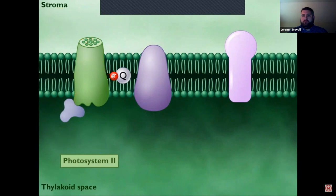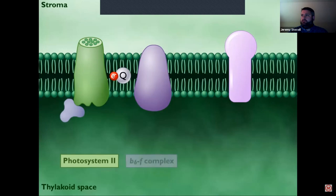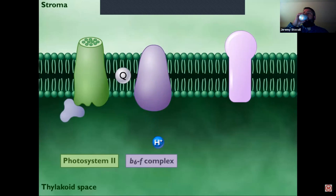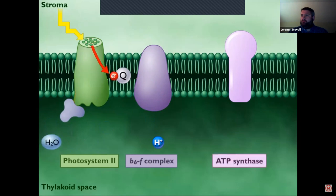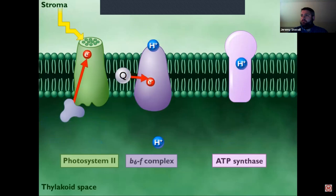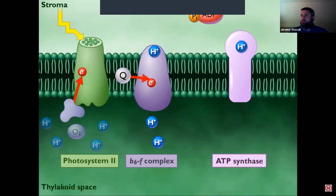The primary electron acceptor for the light-energized electrons leaving photosystem two is plastoquinone. The reduced plastoquinone passes the excited electrons to a proton pump embedded in the membrane called the B6F complex. Arrival of the energetic electrons causes the B6F complex to pump protons from the stroma into the thylakoid space, generating a proton gradient across the membrane. Because the thylakoid membrane is impermeable to protons, the protons must pass through channels provided by ATP synthase. As protons pass through, ADP is phosphorylated to ATP and released into the stroma — this process is called photophosphorylation.